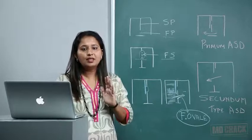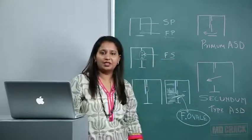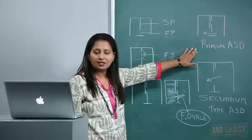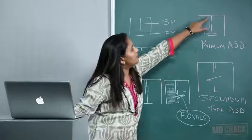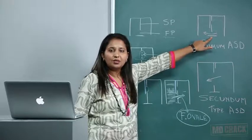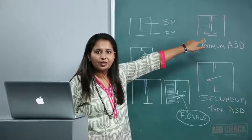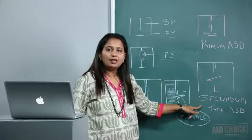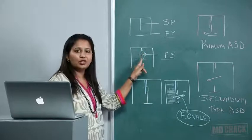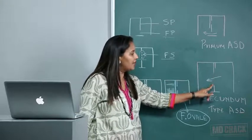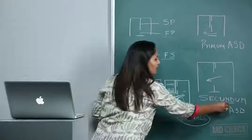Understanding this makes the two types of ASD easy to grasp. Primum type ASD occurs when the septum primum fails to fuse with the endocardial cushion — resulting in a left-to-right shunt through that defect. Secundum type ASD occurs when the apoptosis in the septum primum is so large that even the septum secundum cannot overlay it. The apoptosis occurs but is too large, resulting in the secundum type ASD.